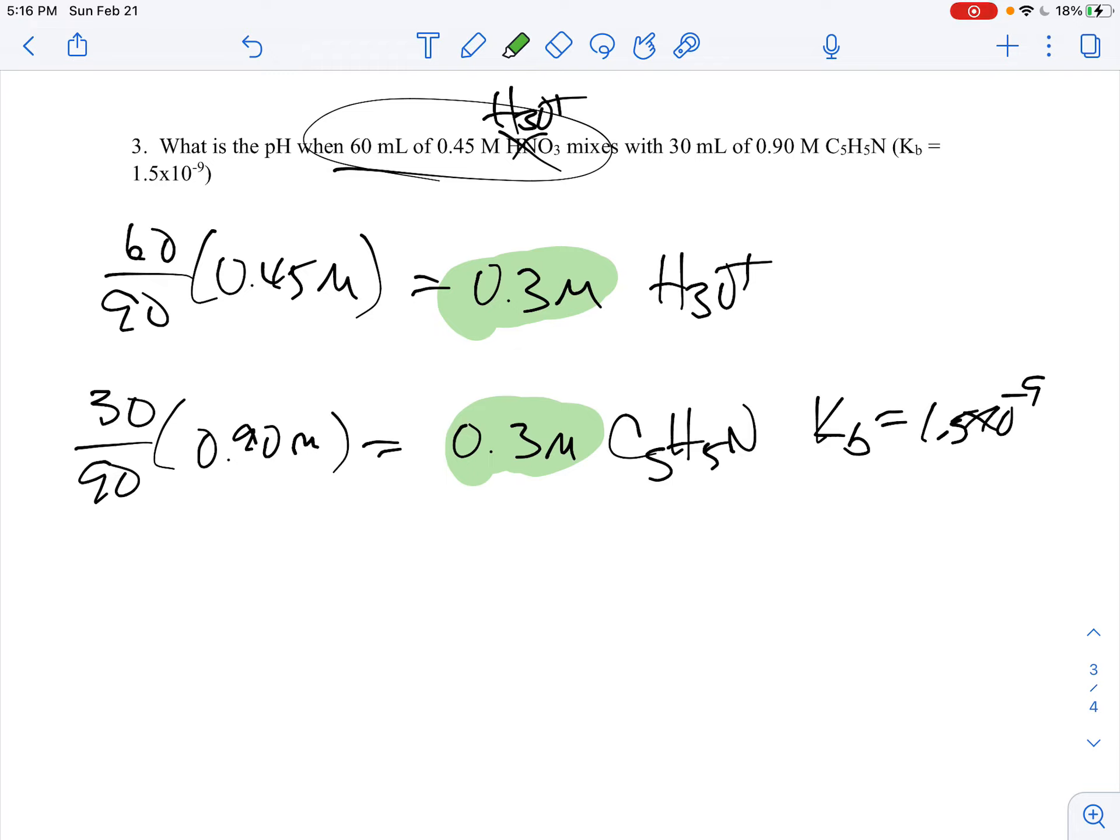So what we're going to end up doing is we're going to end up doing a reverse conjugate diluted system with these guys. Now the long way about this is H3O+ plus C5H5N and that's going to come over here and make H2O and then HC5H5N+.